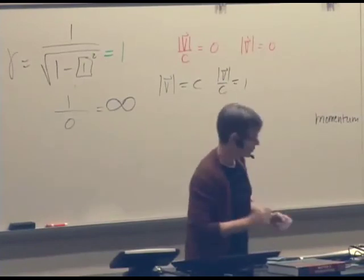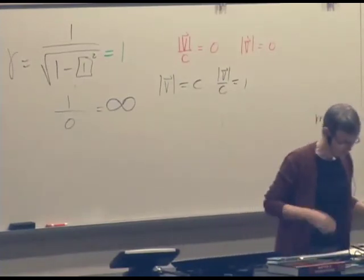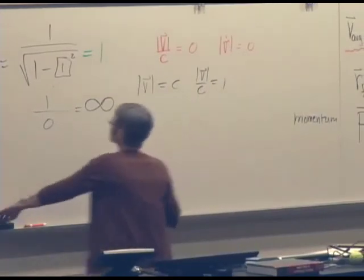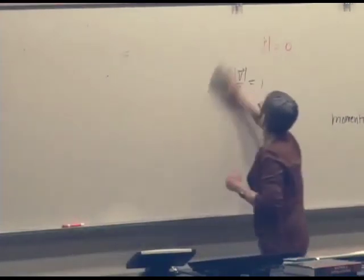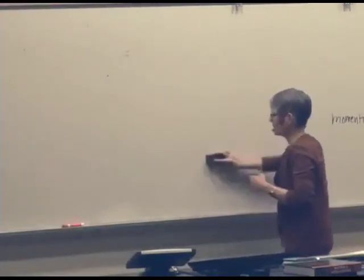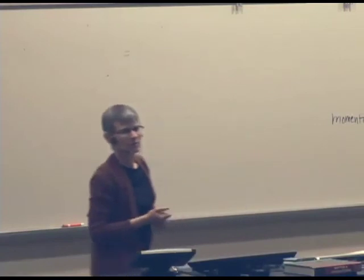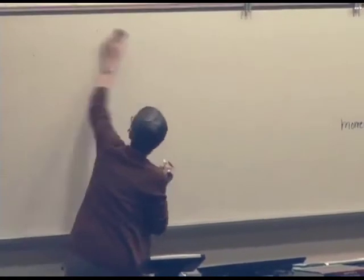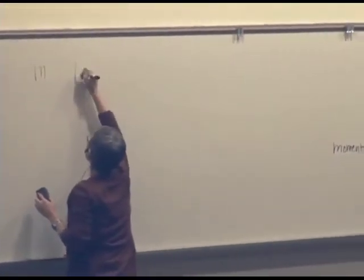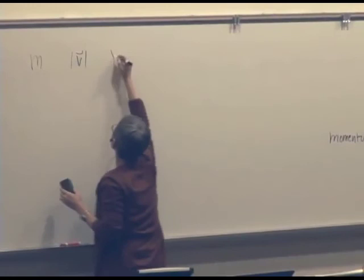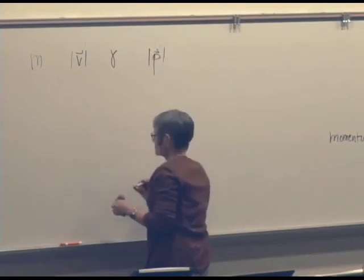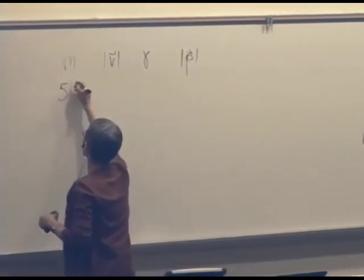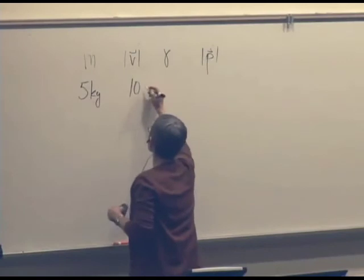So let's take an example and see where it actually matters. Let's consider an object that weighs 5 kilograms. And we'll consider its momentum and then what happens to its momentum if we double its speed. So let's make a table. Here's the mass of our object. Here's its speed. Here's the value of gamma. And here is the magnitude of its momentum. So it's 5 kilograms.